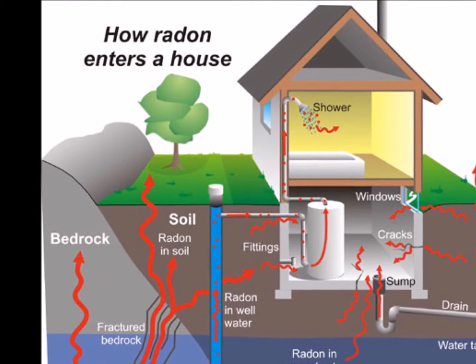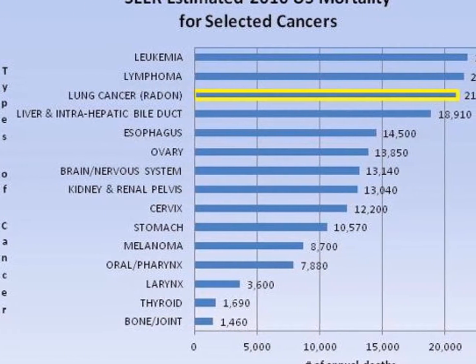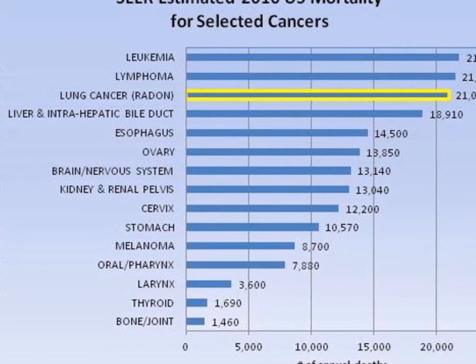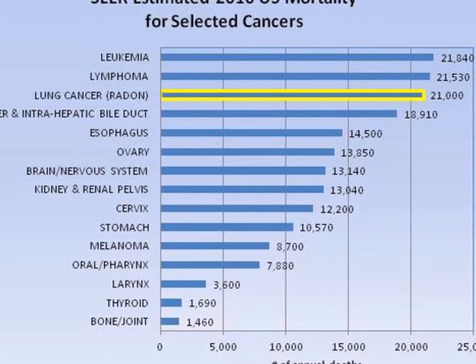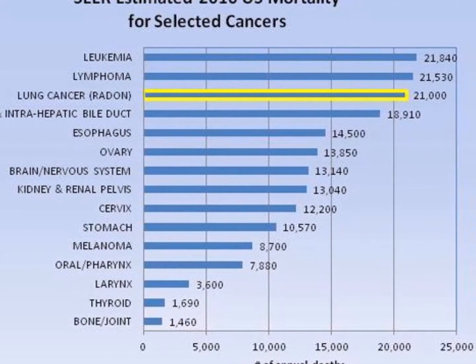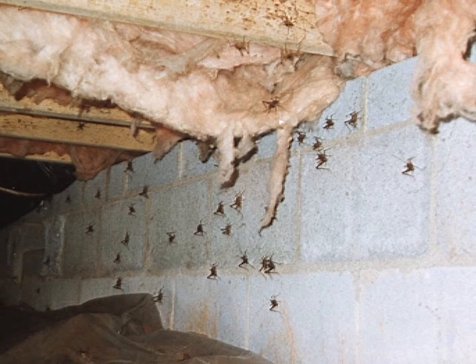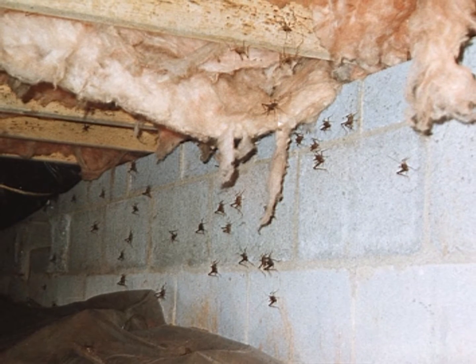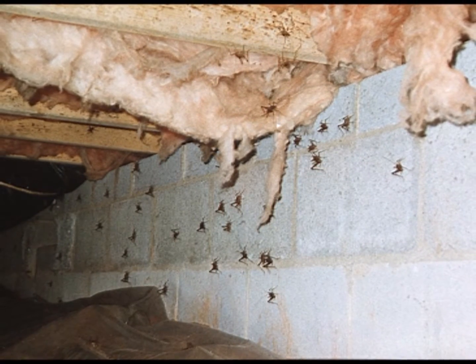According to the EPA and World Health Organization, radon is the third leading cause of cancer in the United States, responsible for approximately 21,000 deaths per year. If you have a crawl space with moisture, mold, and insect issues, then the mold spores and associated pollutants may be sucked into your home.